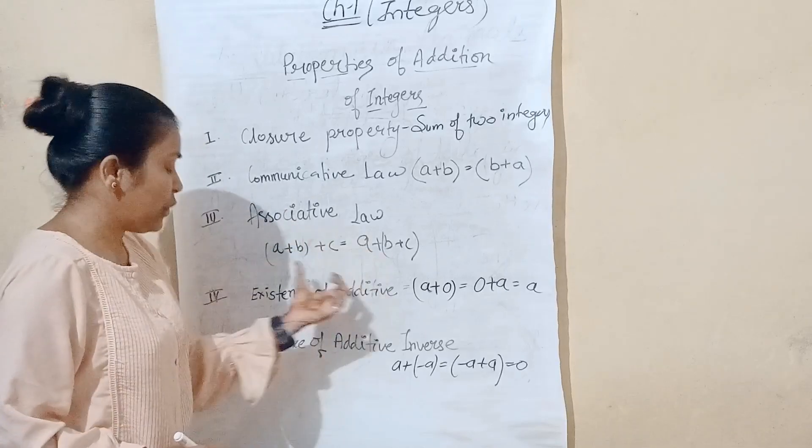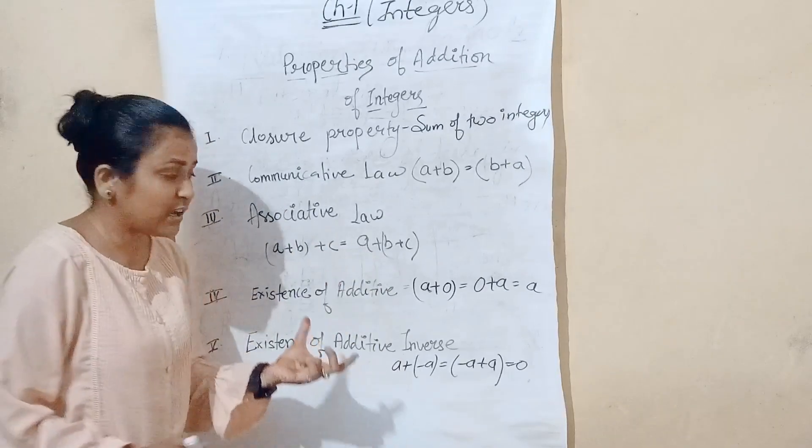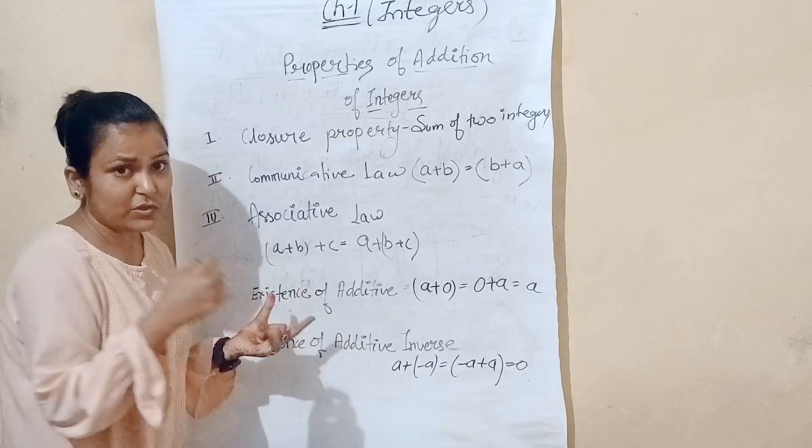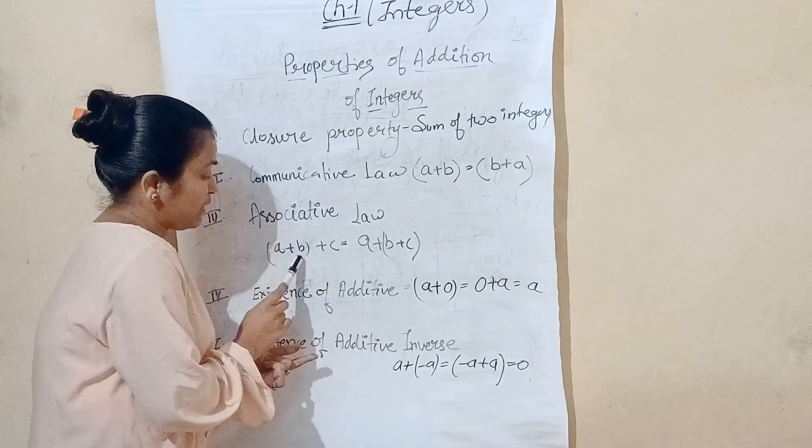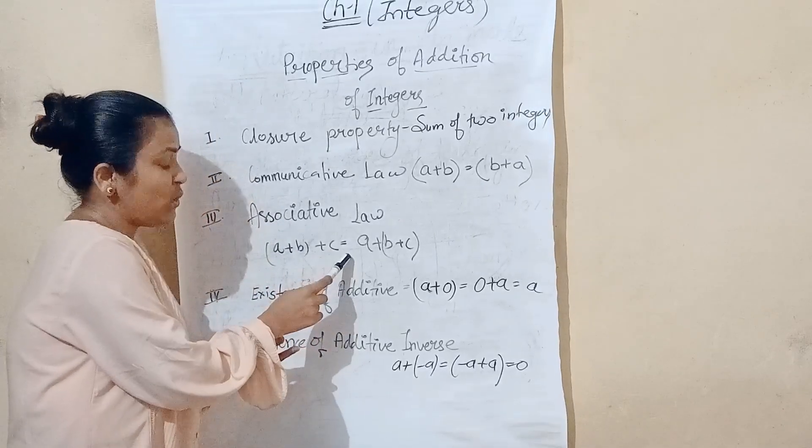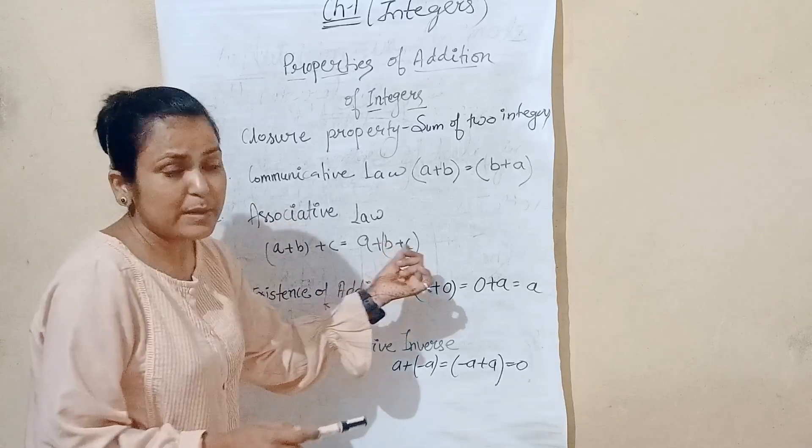Next, associative law. We have three integers. If there are three integers, then we can solve the question. A plus B bracket, plus C is equal to A plus B plus C bracket.